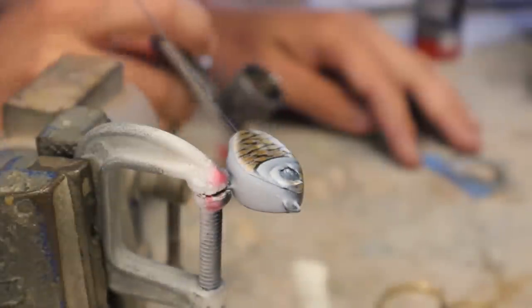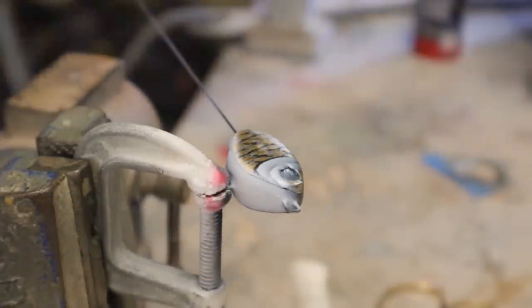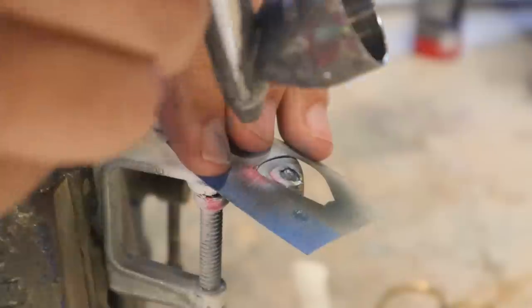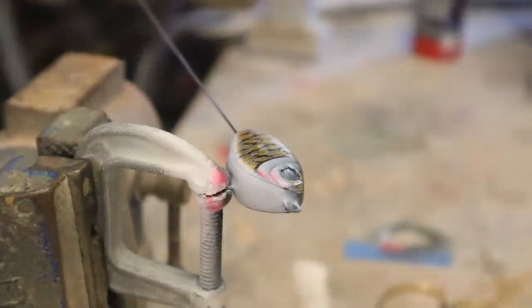Now the last little detail I'm gonna do before I glue the eyeballs on is add a little bit of crimson to the gills on the bottom. You really want to make sure your airbrush is behaving before you do a little detail like this. Perfect.